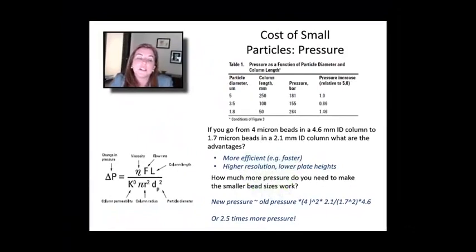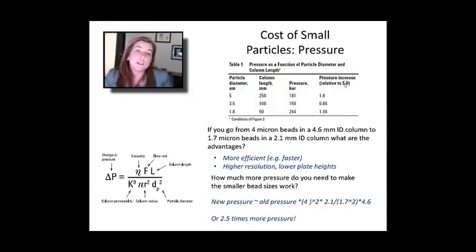This is an approximate calculation. It doesn't take into account the fact that the permeability and other factors may change as you change the column around. But it gets you kind of close. And as an exercise, you might go through the examples here. For example, if you go from 5 microns and 250 millimeters to 3.5 microns and 100 millimeters, how much more pressure do you need? Well, you're going to need more pressure because particle size dropped. But look, you really dropped your column length. And in fact, you were able to compensate and you don't need as much pressure. So you can run the same sort of relative numbers I just did to kind of get a sense of how much more pressure would you need if you change the physical dimensions of the bead and the length of the column. And in general, you're trying to keep those pressures under about 400 bar.